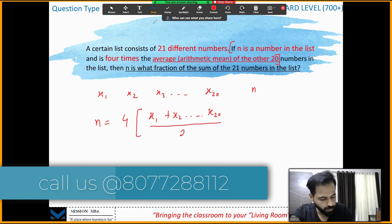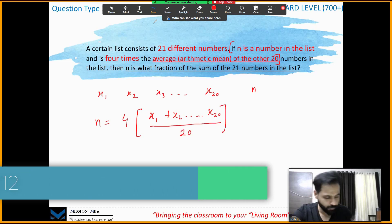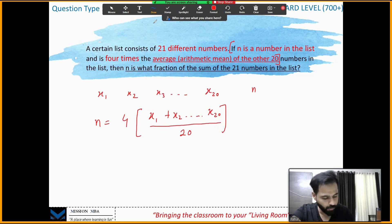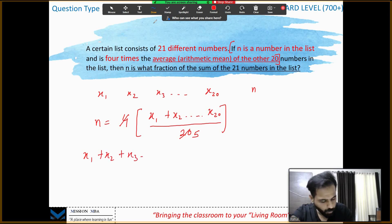What is the average? Sum of the numbers, average of 20 numbers. Be careful, average of 20 numbers, not all 21 numbers. So 20 number sum divided by 20 cancels, and from here I have the value of sum of all the rest 20 numbers. That equals to n/4.